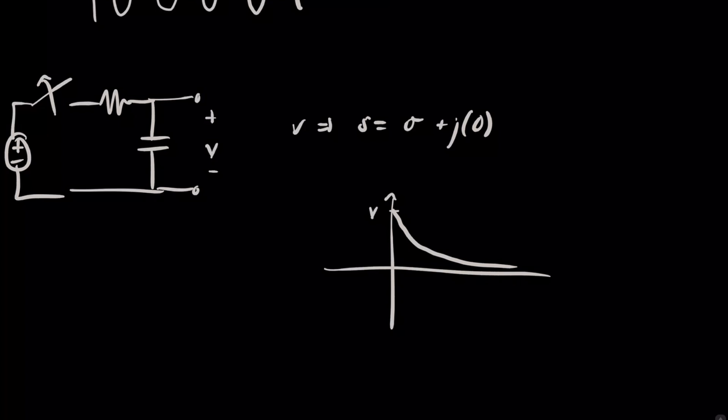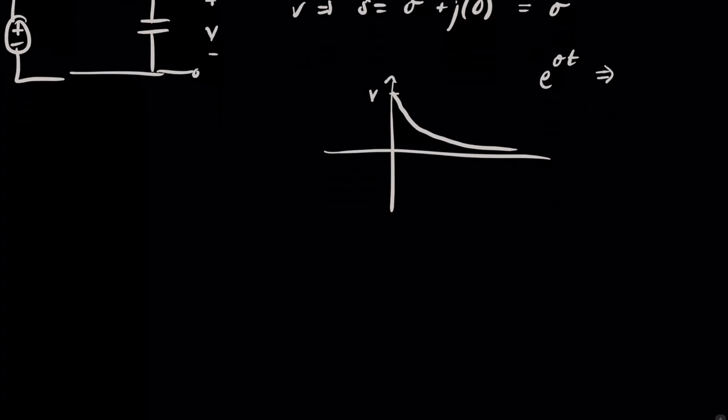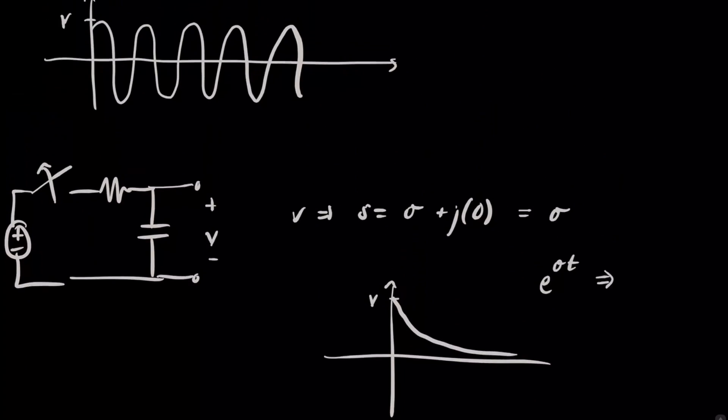And we could model that with an s sigma plus j zero, where s is just equal to sigma. Because we would just have e to the sigma t, which is just some constant. It's just that same dying off proportional to sigma. So you can see that we have the case where we just have alternating current.